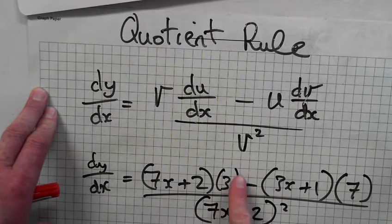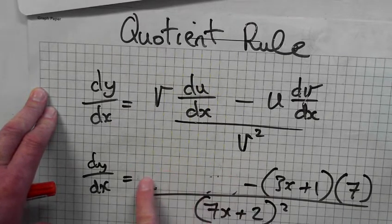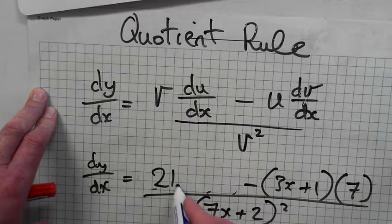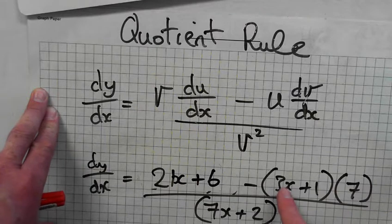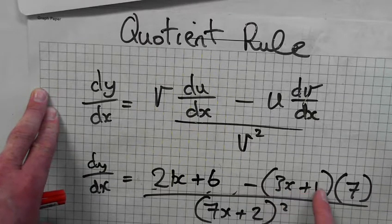So, 3 times 7x, it's 21x plus 6, isn't it? 21x plus 6. And 7 times all of that is 21x plus 7.